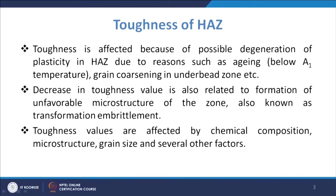Another reason is a more conspicuous decline in toughness, which is observed because of grain coarsening in the underbead zone. In the underbead zone, grain coarsening is taking place — the grain growth region extends into that area — and because of grain coarsening, the toughness value is affected. The decrease in toughness is also related to the formation of unfavorable microstructures in the zone, known as transformation embrittlement.